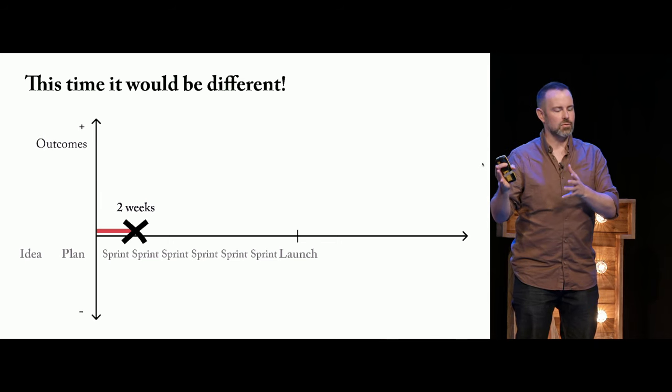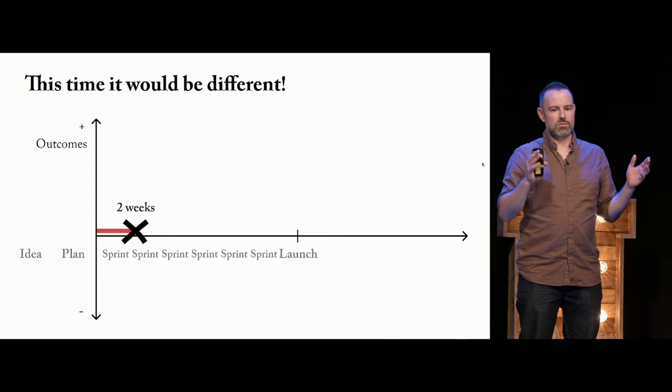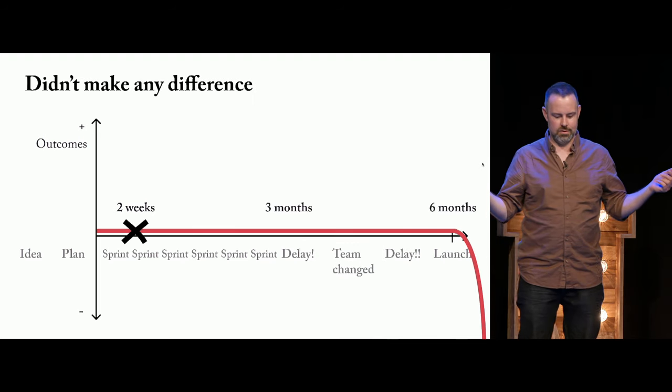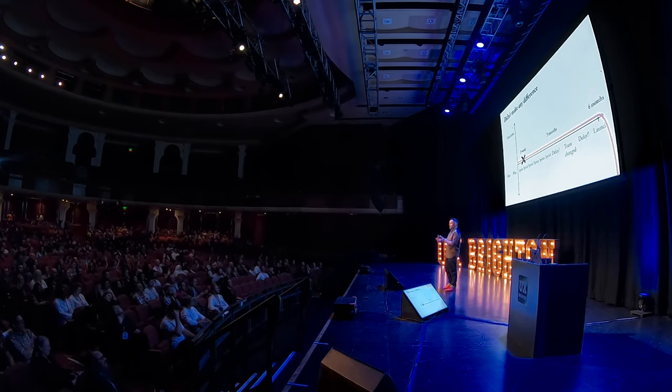There was a project — the execs had an idea for a car loans type product. They saw a need in the market, set the team to it. Being a good research-led team, they sent their researcher to test the flow. But the researcher came back and said: 'I can't find anyone who wants this.' The team carried on anyway. Supposed to be done in three months, it took six. They launched — big champagne and celebrations — and in the following three months, one person applied and got rejected. Then they shuttered the project.